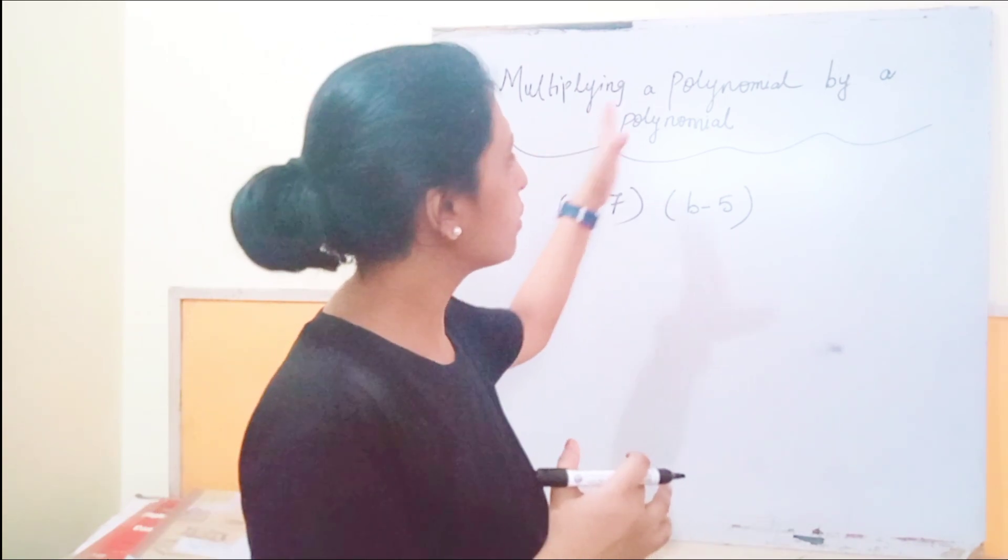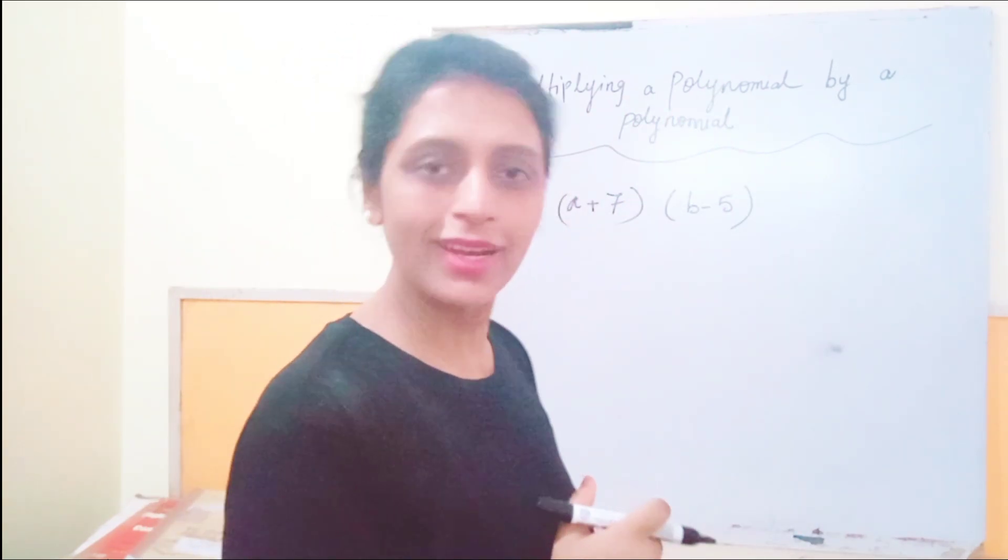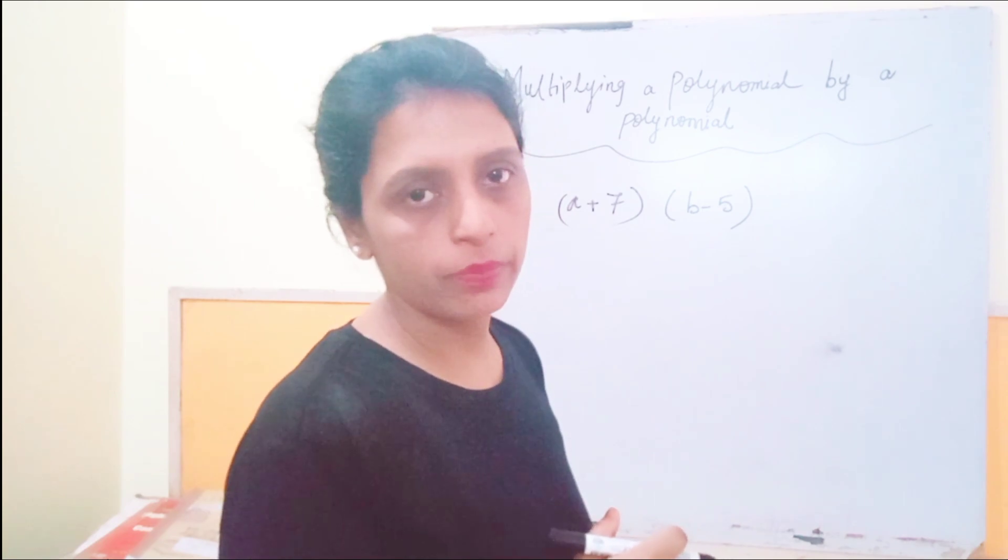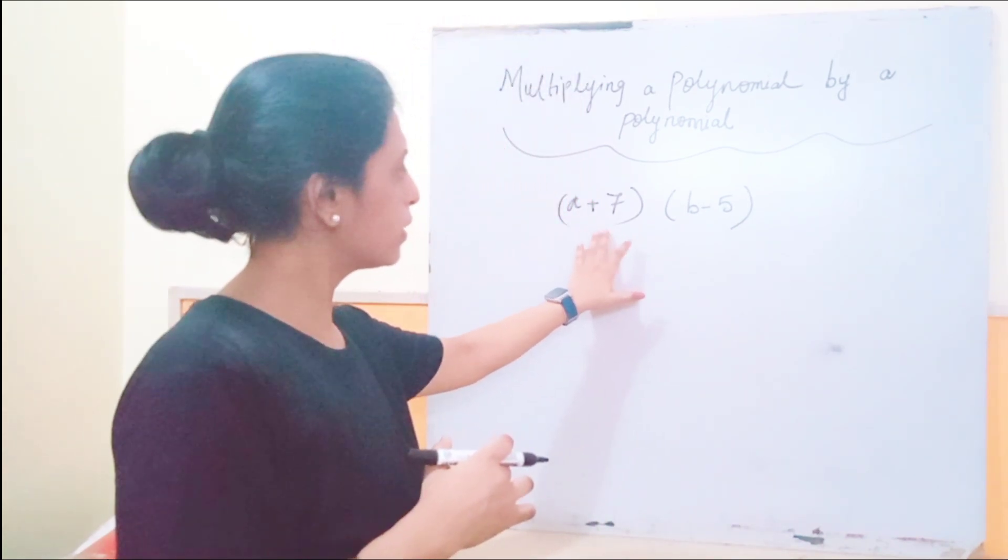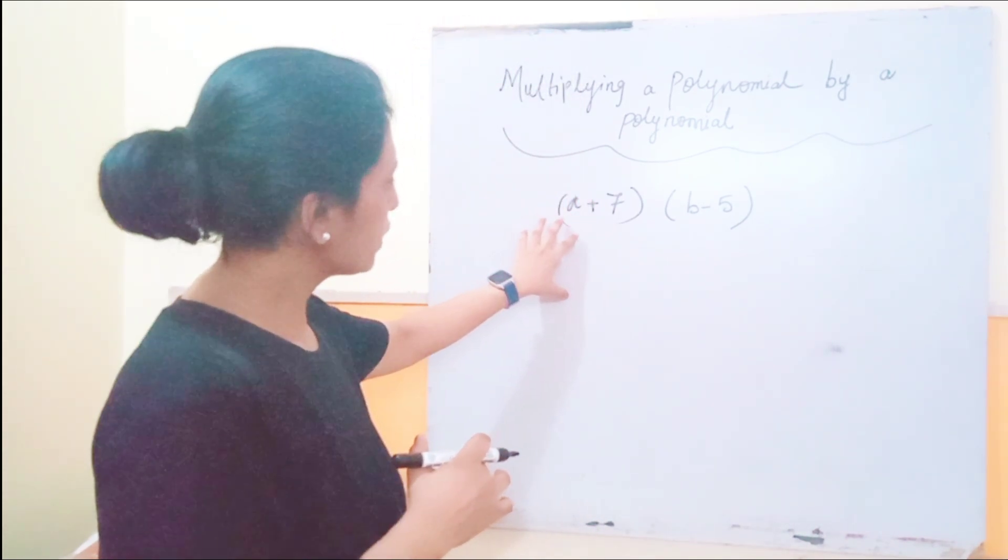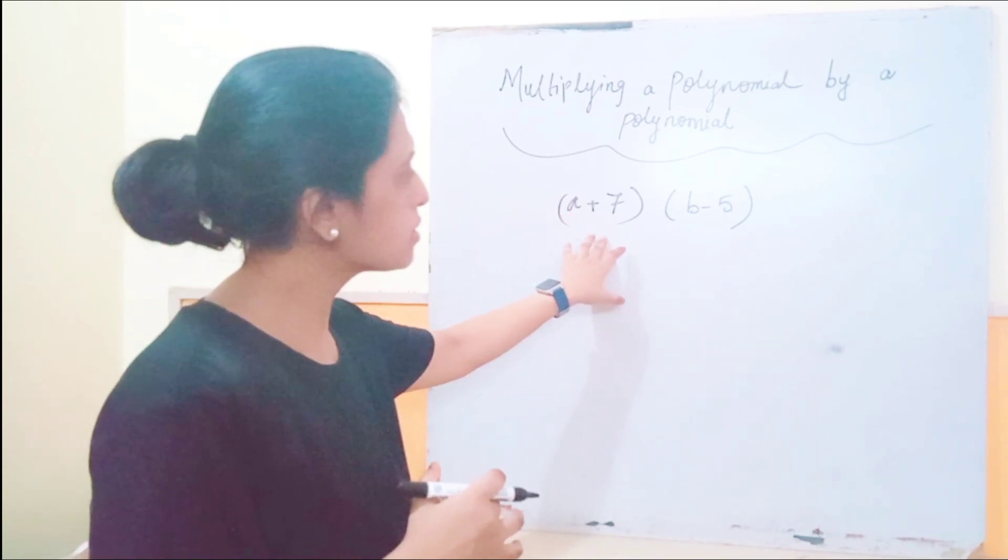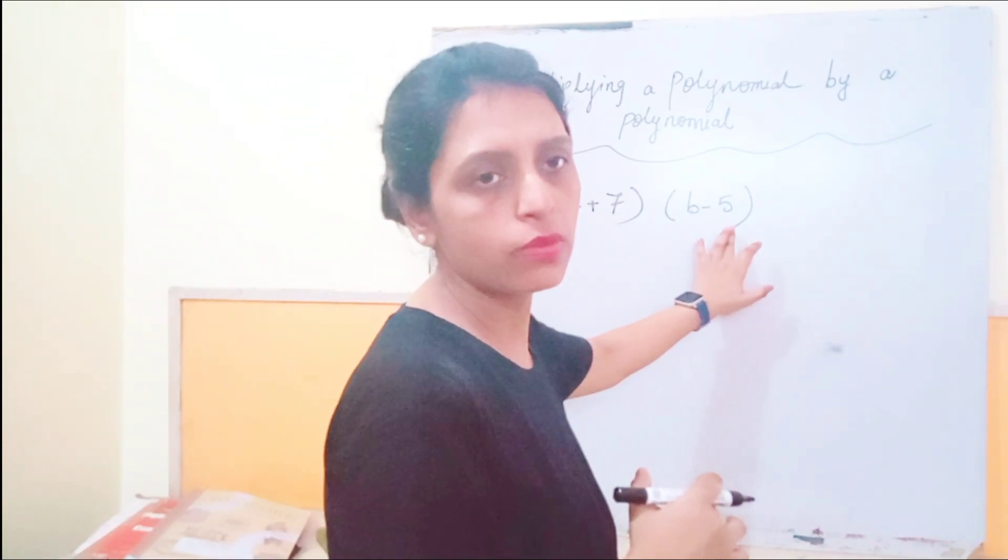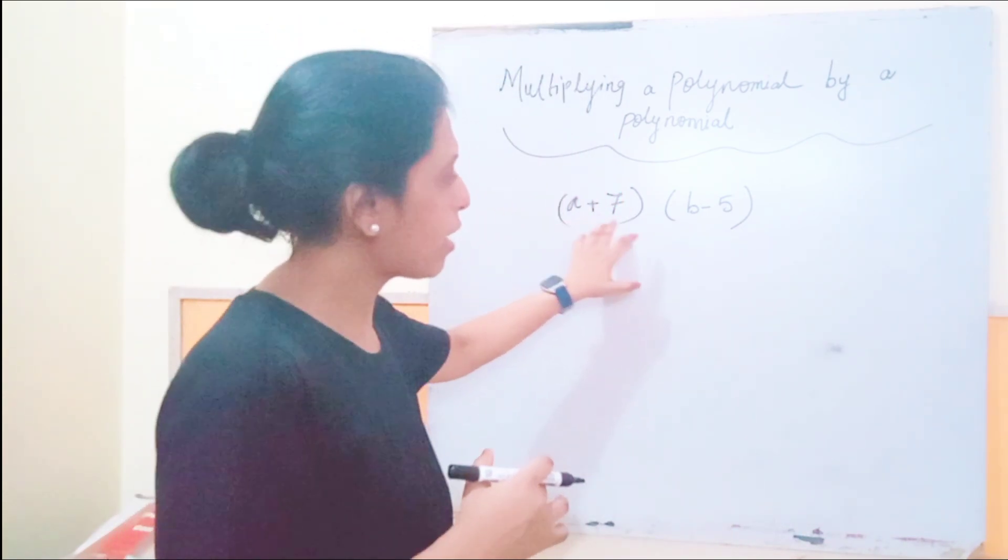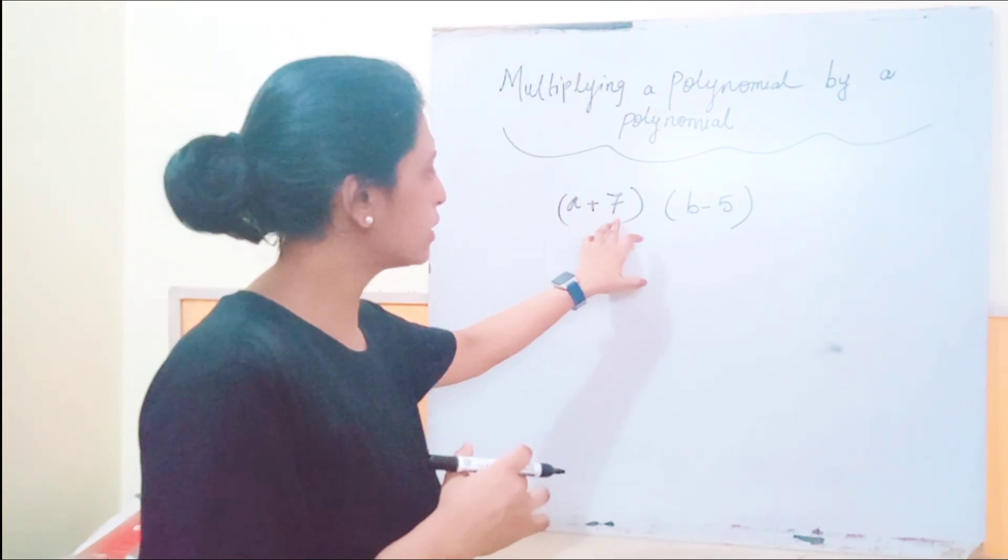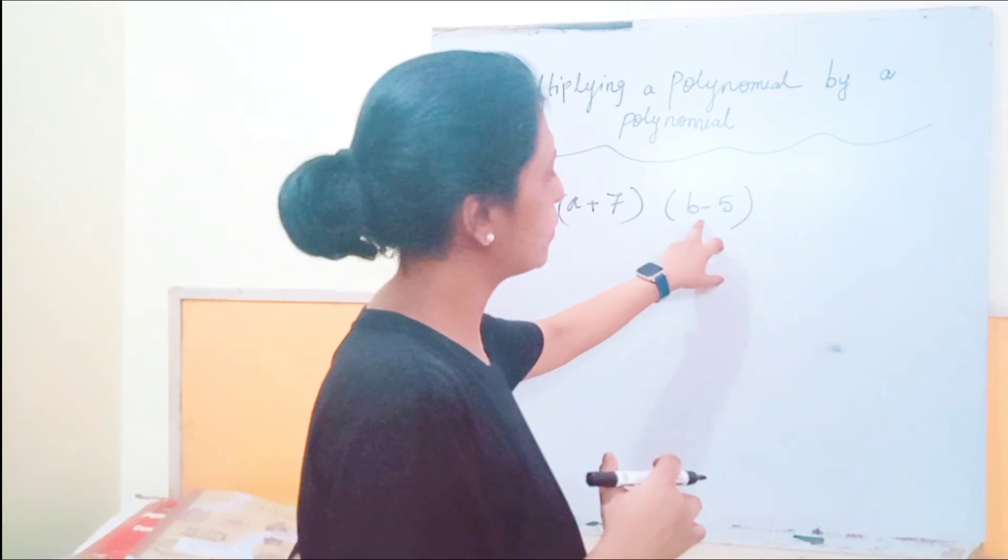So in this video of mine, I'm going to tell you how we can multiply a polynomial by a polynomial. So first I'll tell you how we can multiply two binomials. These are binomials which I have got one example here: a plus 7 multiplied by b minus 5. That means they are having two terms here: a and 7, and in this expression it is b and minus 5.